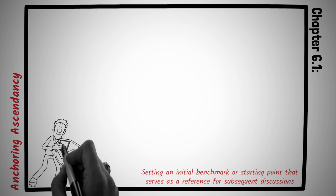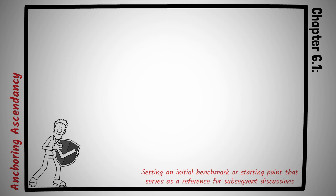Six point one. Anchoring ascendancy. Anchoring in negotiation terms refers to setting an initial benchmark or starting point that serves as a reference for subsequent discussions. The power of this tactic lies in its ability to steer the course of negotiations based on that initial anchor. If used effectively, even an extreme anchor can make subsequent offers seem more reasonable by comparison.